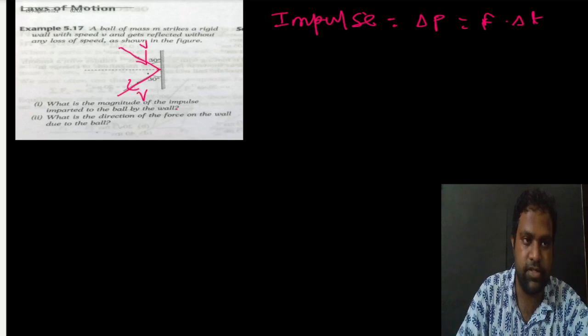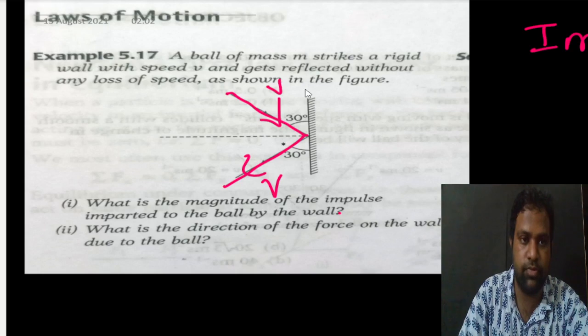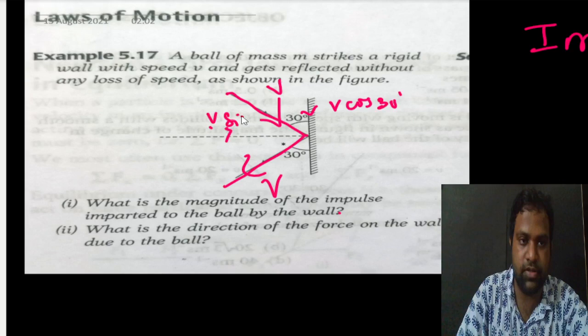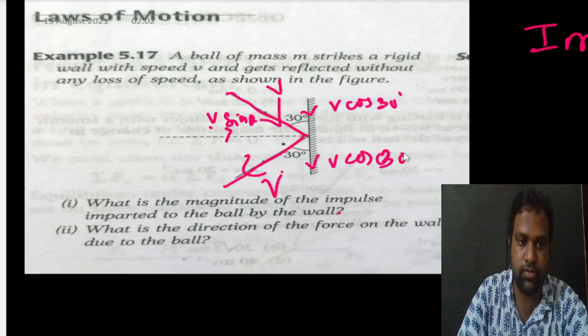Now, the initial velocity will have two components: V cos 30 and V sin 30. Similarly, the final velocity will also have two components: V cos 30 and V sin 30.